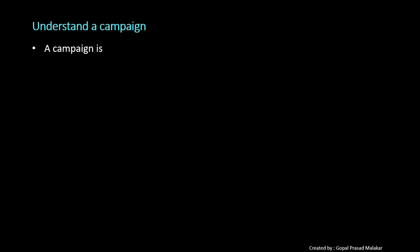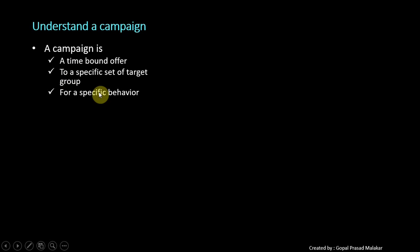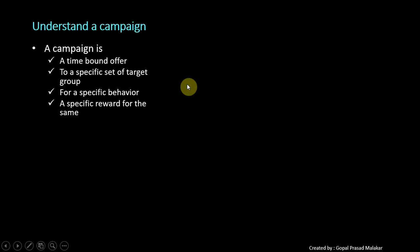So let's first understand what is a campaign. A campaign has 4 characteristics. First of all, it is a time-bound offer. Second, it is for a specific set of target group. Third, it is for a specific behavior — it is very clear what behavior you need to exhibit — and if you exhibit that behavior, there is a clear-cut reward for the same. Let me introduce you to all these things through a hypothetical example.